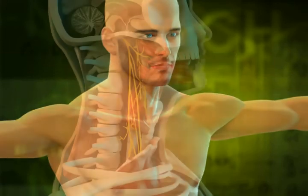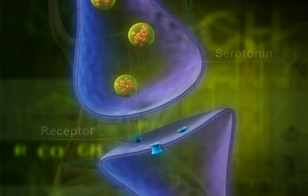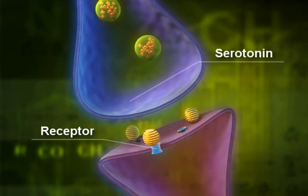For example, granisetron, dolasetron, and ondansetron all reduce the activity of the vagus nerve, the nerve that activates the vomiting center in the medulla oblongata, and also block the serotonin receptors in the chemoreceptor trigger zone.